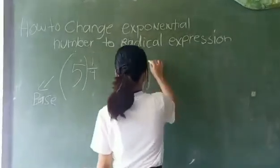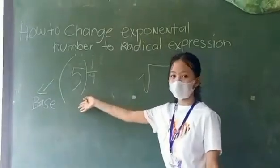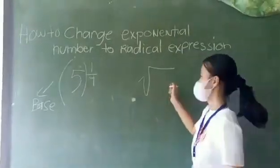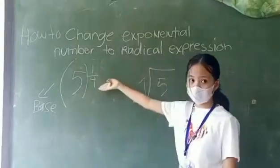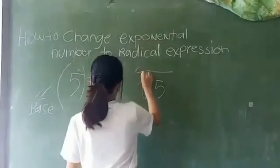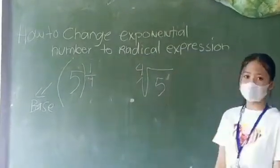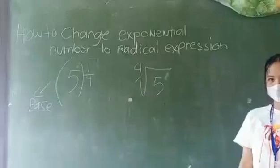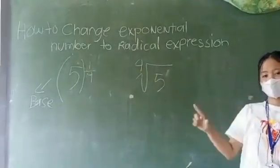The base is always placed inside the radical. The denominator becomes the index, and the numerator becomes the exponent. If the exponent is one, it is already visible — it doesn't need to be written explicitly. So how do we simplify a radical expression?